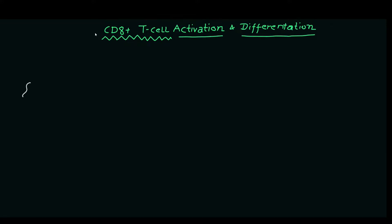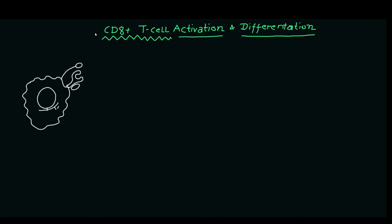To explain the differentiation as well as the activation of CD8 positive T cells, first I'm going to show you how antigens are presented to the naive CD8 positive T cell. Here, I'm designing an antigen presenting cell. It's named antigen presenting cell because it presents the part of the pathogenic organism to various cell types. It's also known as APC — antigen presenting cell.